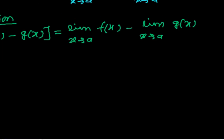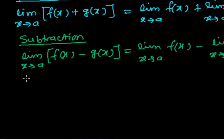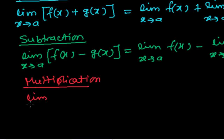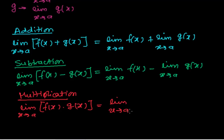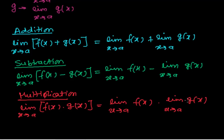Now we are doing multiplication — what happens in multiplication. Suppose the limit as x tends to a of f(x) times g(x). We simply write it as: the limit as x tends to a of f(x), times the limit as x tends to a of g(x). The limit of the product of two functions equals the product of their individual limits — we can simply multiply the limit of the first function by the limit of the second function.